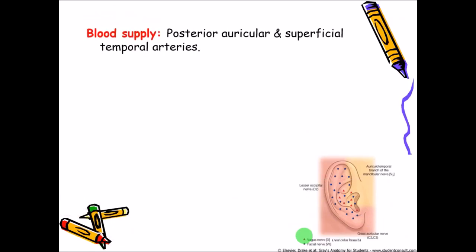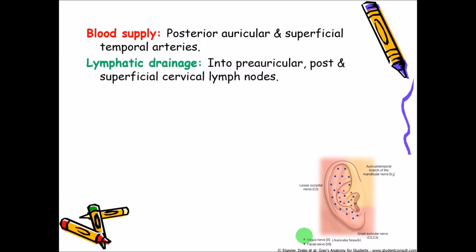The blood supply of the pinna or auricle is supplied by the posterior auricular as well as the superficial temporal arteries and their branches. The lymphatic drainage is into the preauricular as well as the postauricular group of lymph nodes. These preauricular and postauricular nodes finally drain into the superficial cervical group of lymph nodes.